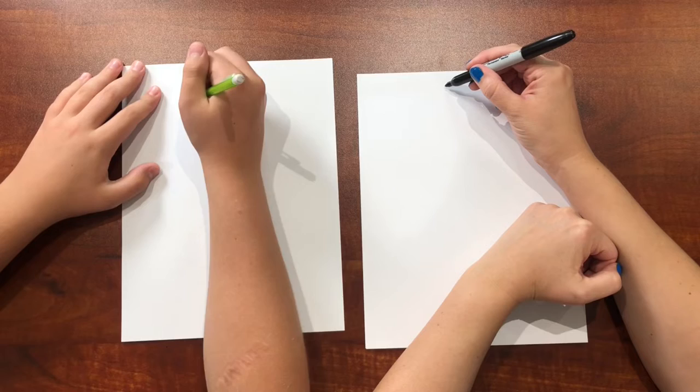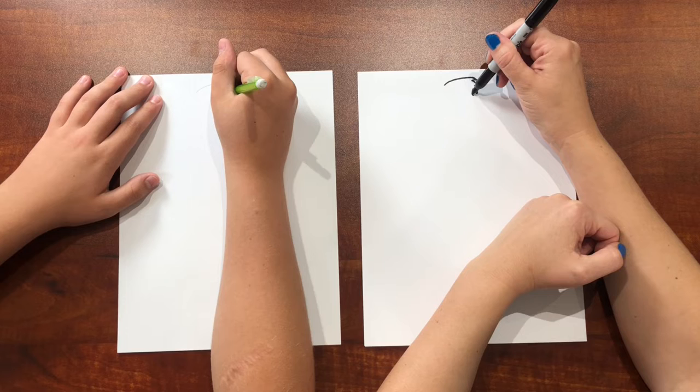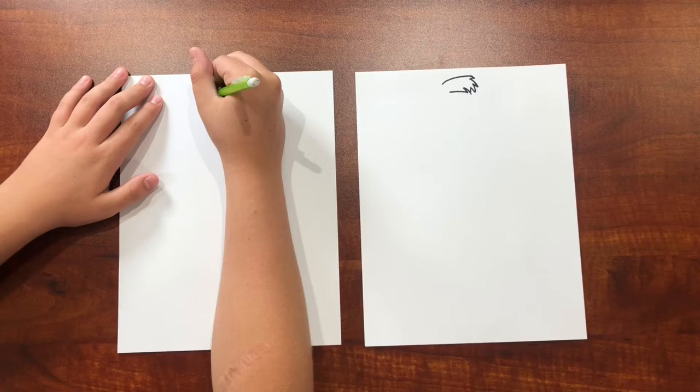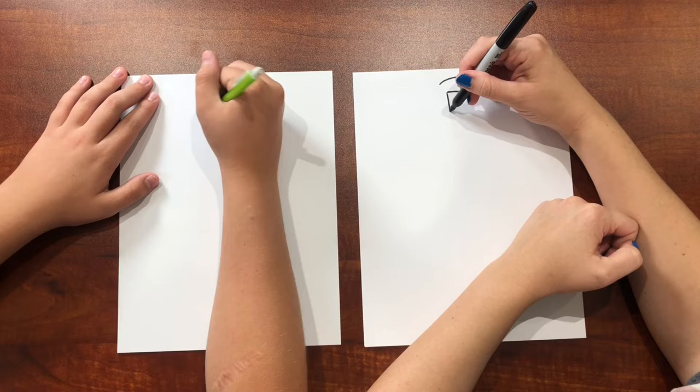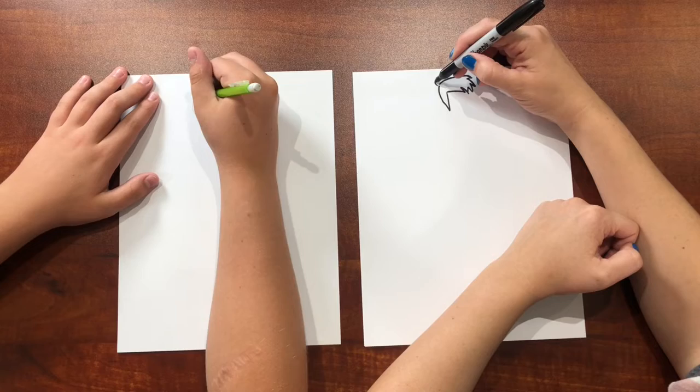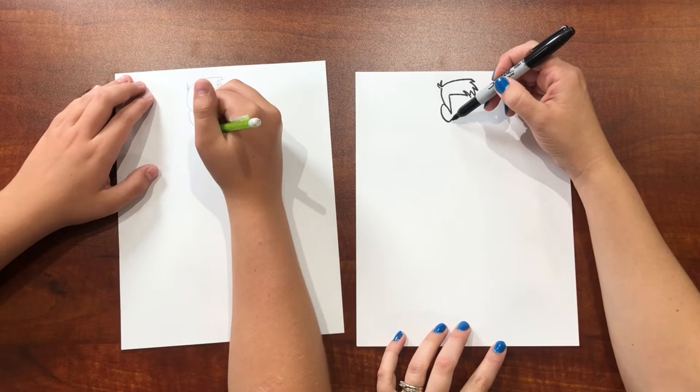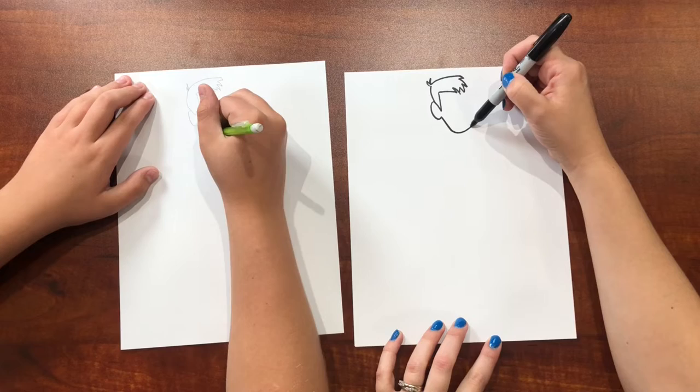We're gonna draw his hair going up like that, curves in and down, and it has these little spikies and then it goes back. Now we're gonna draw a straight line down and then it's gonna angle up and curve in, and then he's gonna have these little messy tufts of hair back there. And then his ear is gonna go like that.